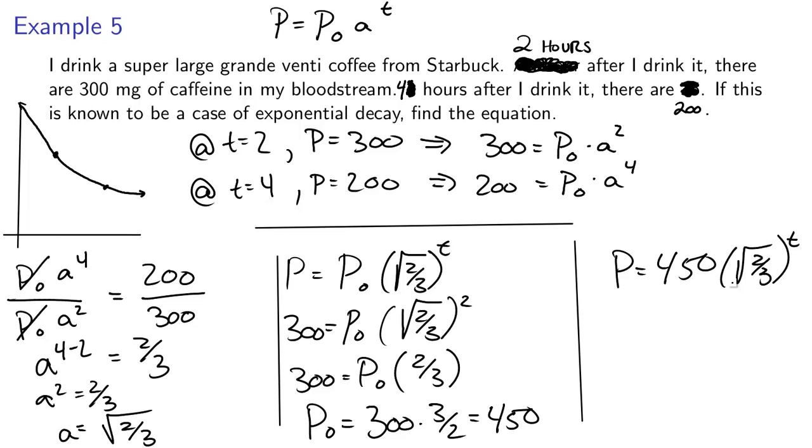And just to summarize what I did here, the big picture was I just took, they gave me two data points, and so I just plugged those into the equation that I knew had to be true. And then my goal from there is going to be to figure out what A and P0 are, so I divided to get rid of the P0, that allowed me to find A, and then once I had found A, I just plugged in one of the points into my equation, and that allowed me to solve for P0.